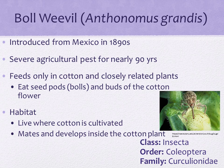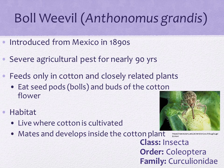Boll weevil, Anthonomus grandis, is a beetle of the insect family Curculionidae, order Coleoptera, class Insecta. It's a cotton pest in North America. Introduced to the United States from Mexico in the 1890s, the boll weevil was a severe agricultural pest for nearly 90 years, until the launch of an aggressive multi-year eradication program in 1978. The boll weevil lives in and around areas where cotton is cultivated. In the spring, it mates and develops inside the cotton plant. It spends the winter in trash and leaf litter in the surrounding area. The boll weevil lives and feeds only in cotton and closely related plants, eating seed pods and buds of the cotton flower.